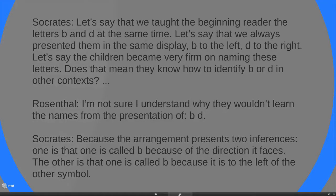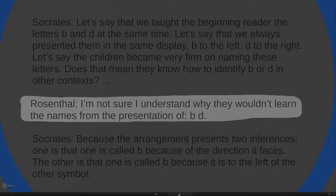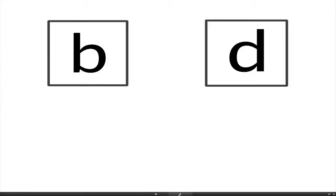Now Rosenthal is a little bit surprised by this. And as the discussion develops, he says, I'm not sure I understand why they wouldn't learn the names from the presentation of B and D. There it is. They're going to learn it. B on the one side, D on the other side. And then here comes the clincher.